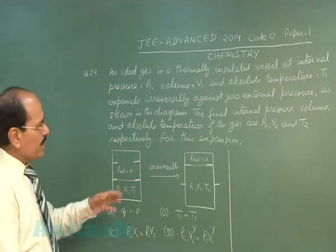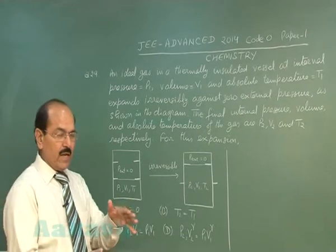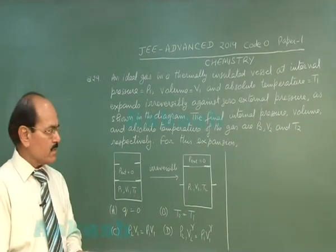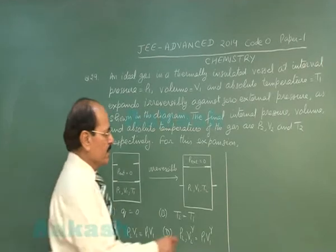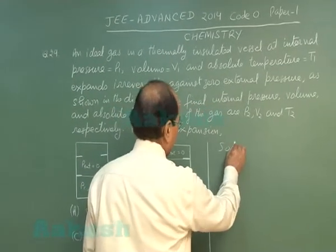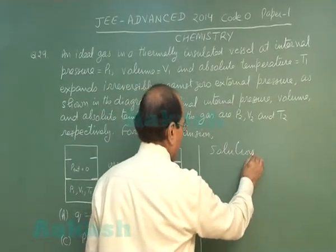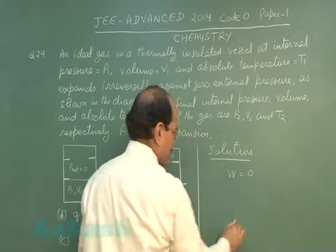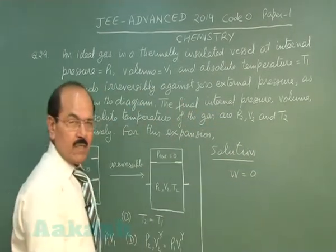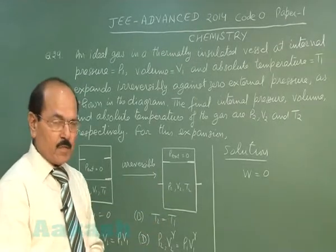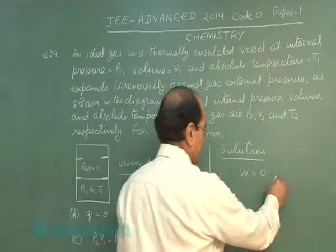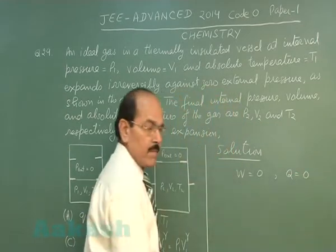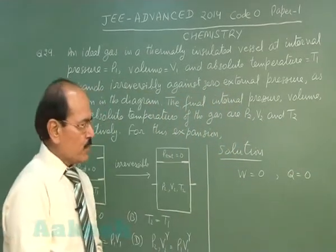When an ideal gas expands adiabatically against zero external pressure, no work is done. So the solution: work done is zero. Since it is an adiabatic process, there is no exchange of heat energy between system and surroundings. So Q is zero.